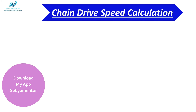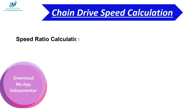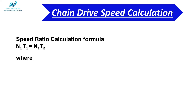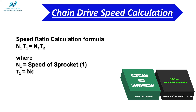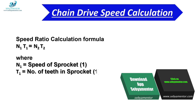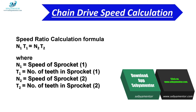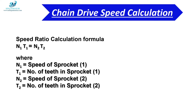Let's see how to calculate chain drive speed. In a chain drive system, there is a formula to calculate the drive speed. The formula is N1 × T1 = N2 × T2, where N1 is the speed of sprocket 1, T1 is the number of teeth in sprocket 1, N2 is the speed of sprocket 2, and T2 is the number of teeth in sprocket 2.